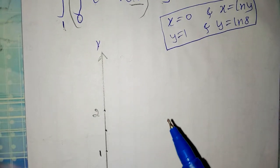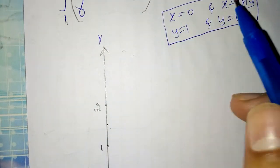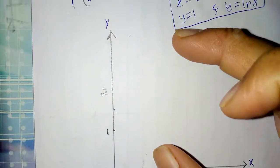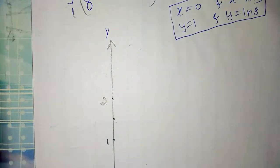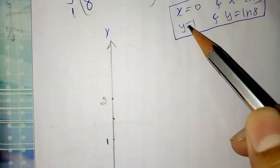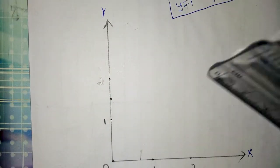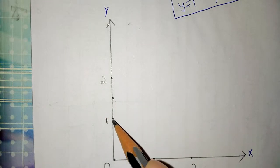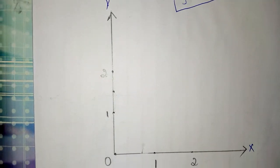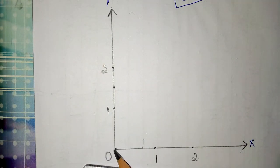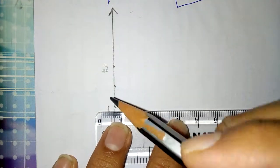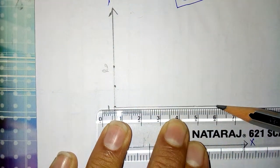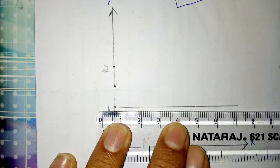Now, what is x is equal to 0? The y-axis always represents the equation x is equal to 0. Now, what is y is equal to 1? In the y-axis, where there is 1, we have to draw a line parallel to the x-axis. This becomes the line y is equal to 1.